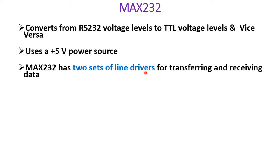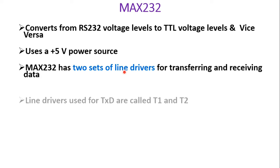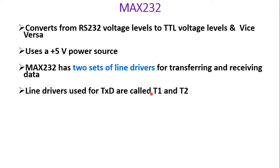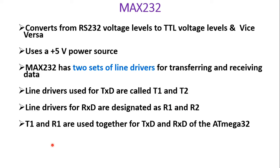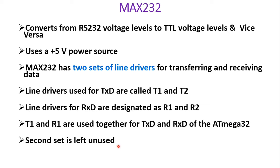MAX232 has two sets of line drivers for transmitting and receiving data, allowing connection of two devices on each side. The line drivers for TXD are called T1 and T2, and for receiving they are R1 and R2. T1 and R1 are used together for the TXD and RXD of Atmega32, and the second set is left unused unless you want to connect another device.